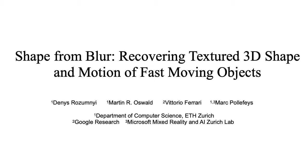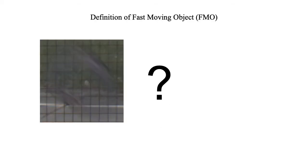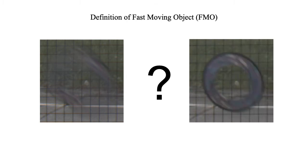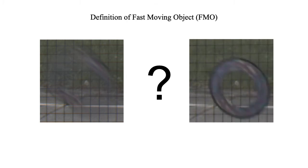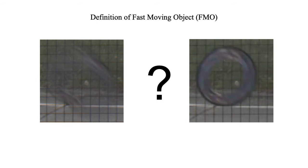I will present Shape from Blur — recovering texture, 3D shape, and motion of fast-moving objects. Fast-moving objects move over a distance larger than their size during the camera exposure time of a single frame. Images of such objects are formed as a composition of motion-blurred projections of the moving 3D object and the background.